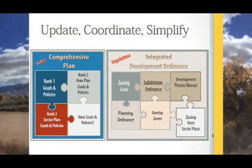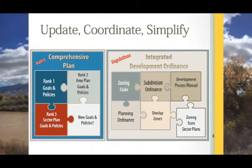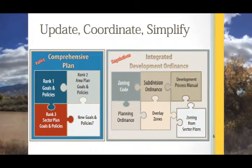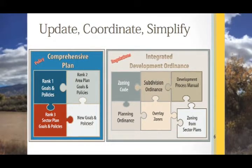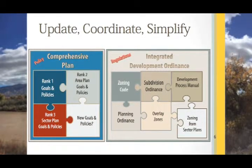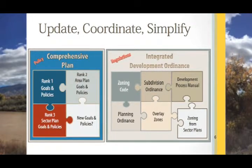The regulatory document will be the Integrated Development Ordinance, which will include a new and updated zoning code, subdivision ordinance, pieces of the development process manual guiding development within the public right-of-way, an updated planning ordinance, overlay zones, and zoning from sector development plans, which are currently the Rank 3 plans in the city.